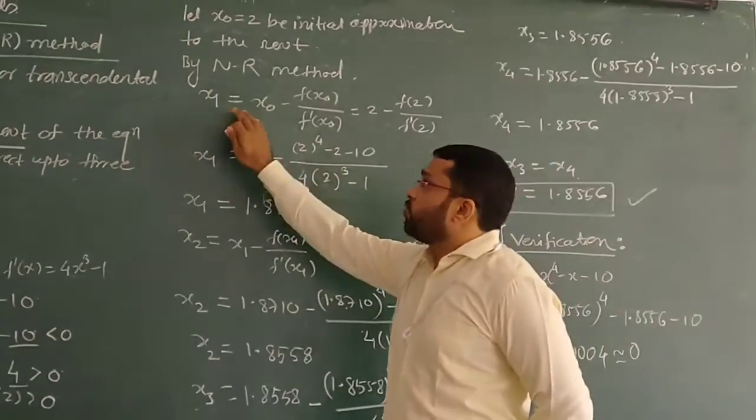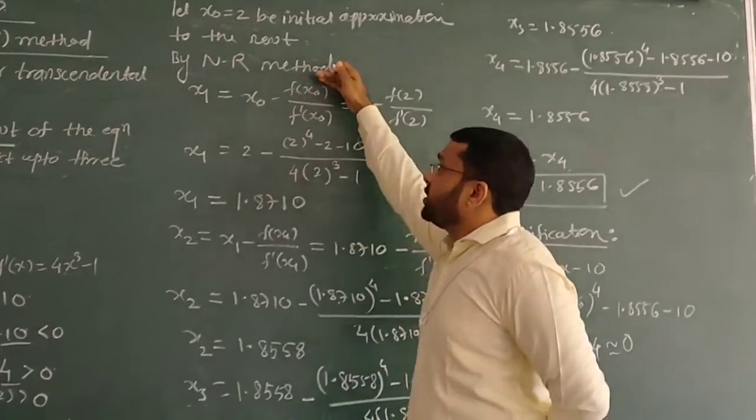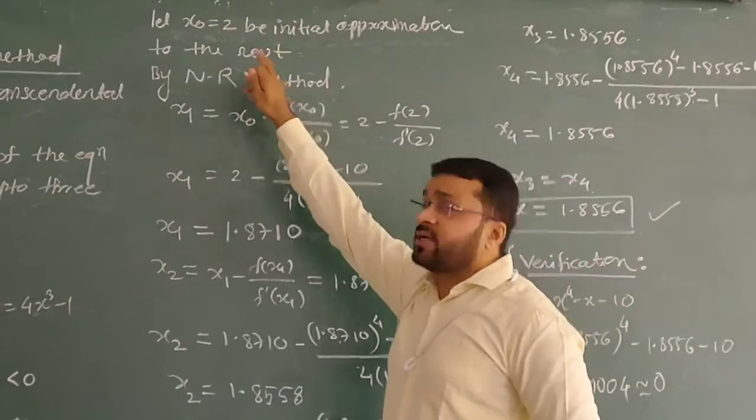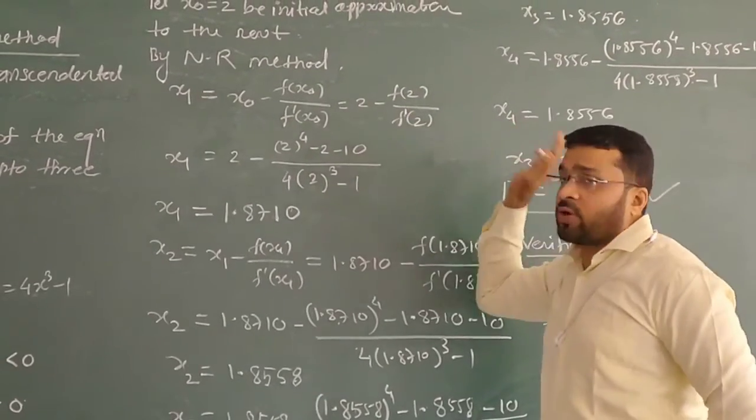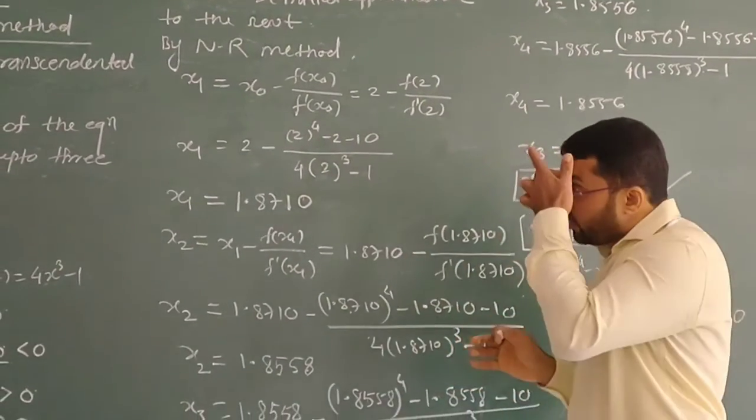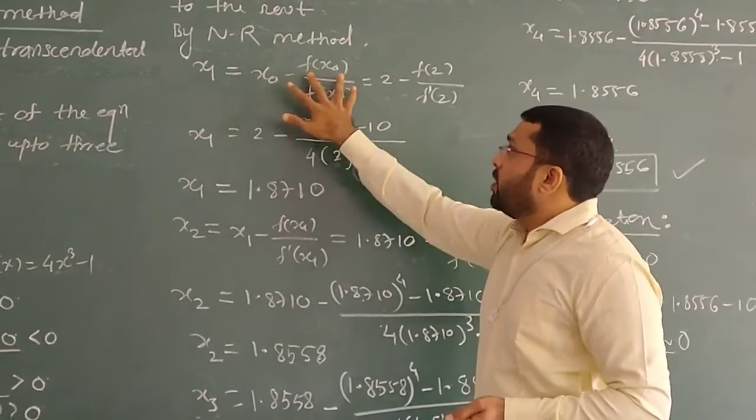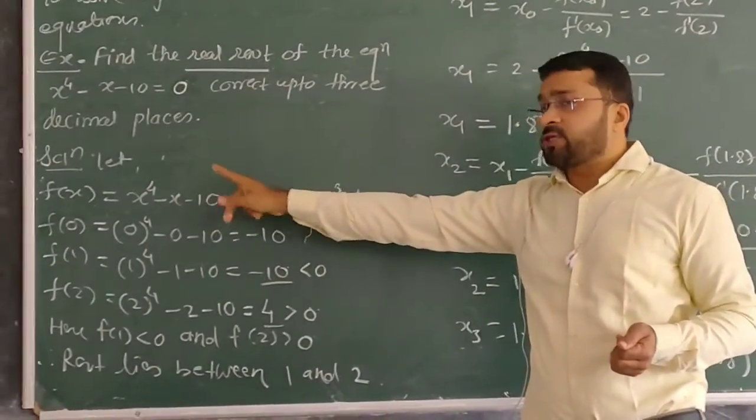For the first iteration, x₁ equals the formula: x₀ minus f(x₀) over f'(x₀). And x₀ we have considered as 2. So it is 2 minus f(2) over f'(2). After that, substitute 2 here. We require f(2), so the function is already defined. x will be replaced by 2.